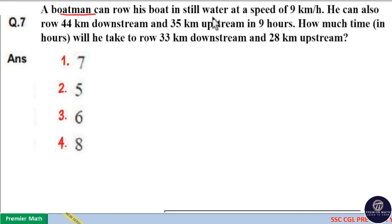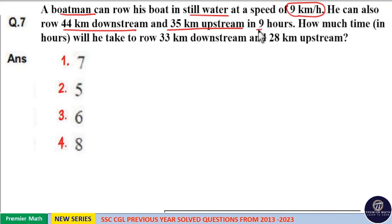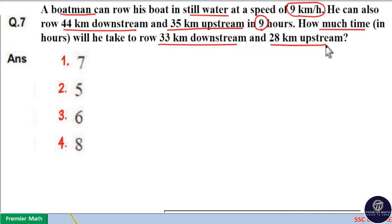A boatman can row his boat in still water at a speed of 9 km per hour. He can also row 44 km downstream and 35 km upstream in 9 hours. How much time in hours will he take to row 33 km downstream and 28 km upstream?